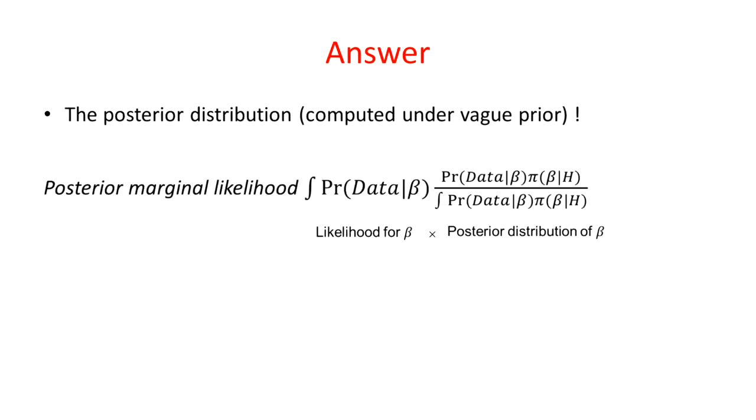Well, the only way, really, is to use the posterior distribution itself in the Bayes factor. So now we have what's called the posterior marginal likelihood. Again, we are integrating the likelihood over the parameter beta, but the integration is now taken over the posterior distribution of the parameter.